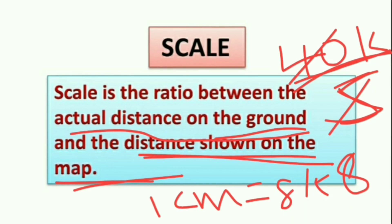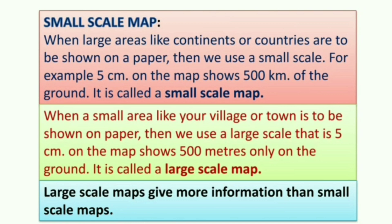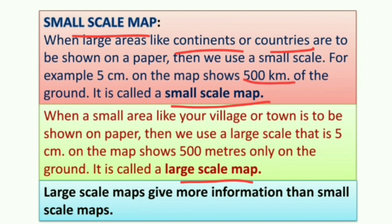We use two types of scales in a map based on the requirement: small scale maps and large scale maps. When large areas like continents or countries are to be shown on paper, we use a small scale map. For example, if 500 kilometers on the ground is shown as 5 centimeters on the map, it is called a small scale map — meaning in reality it is 500 kilometers but on the map we show just 5 centimeters.